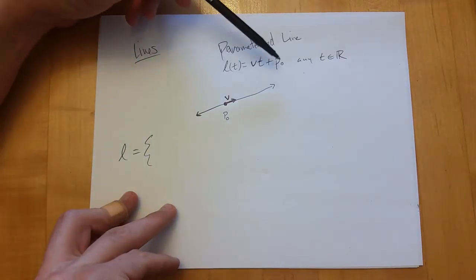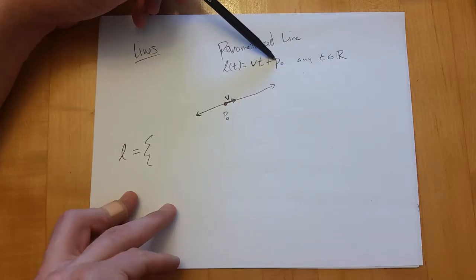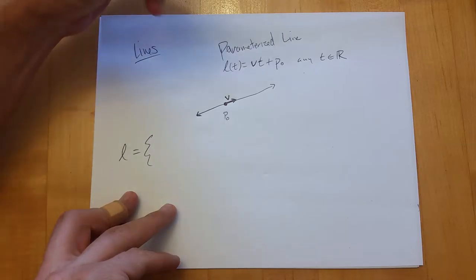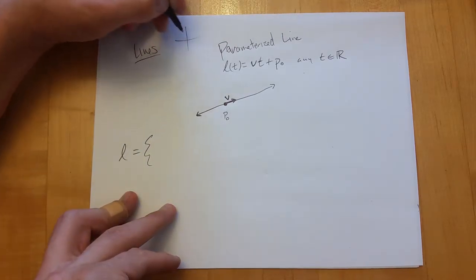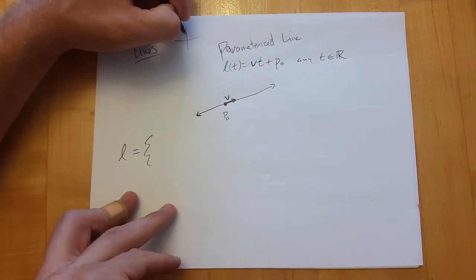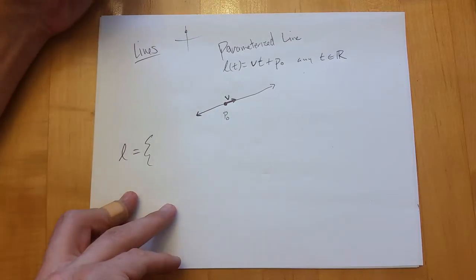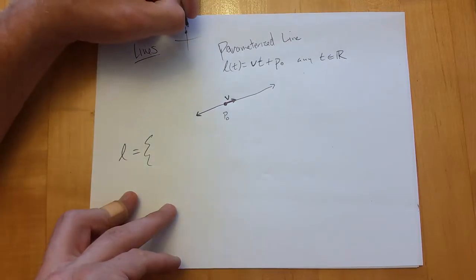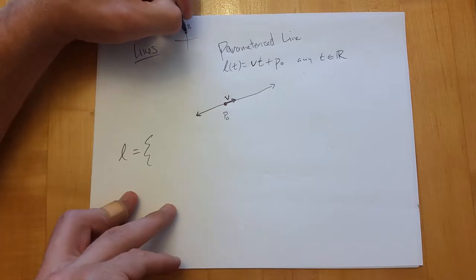To intersect planes, you'd take the two plane equations and figure out what points they have in common — solving a linear system of two linear equations. A linear equation corresponds to a plane, which I'll explain after we go through lines and the definitions of how you describe planes. This is a parameterized line.